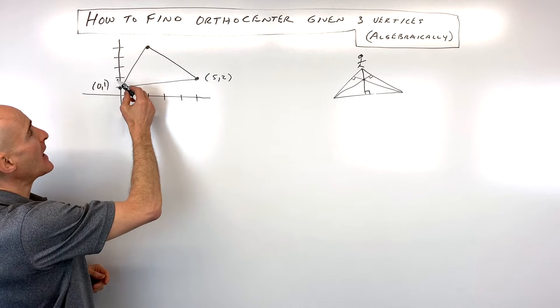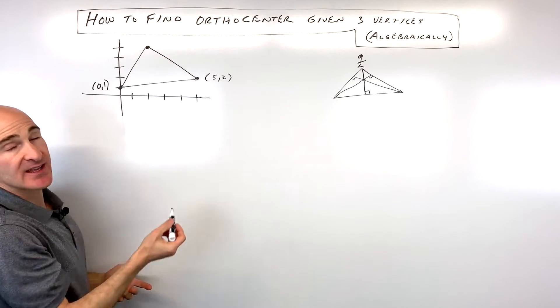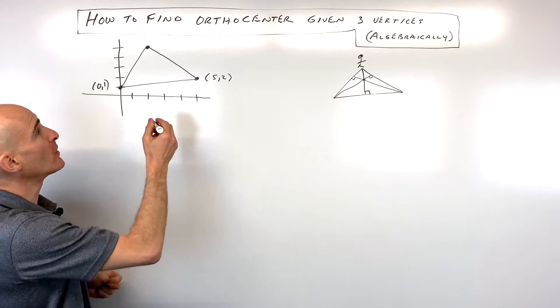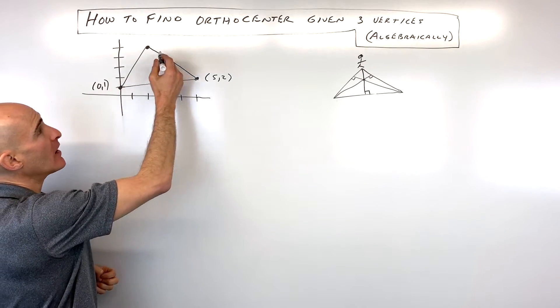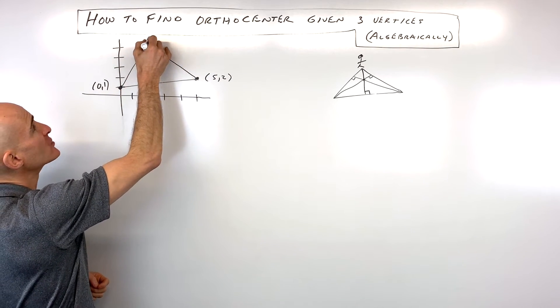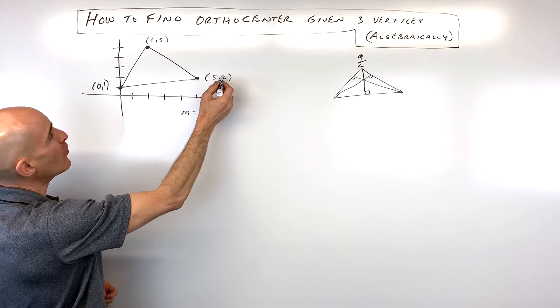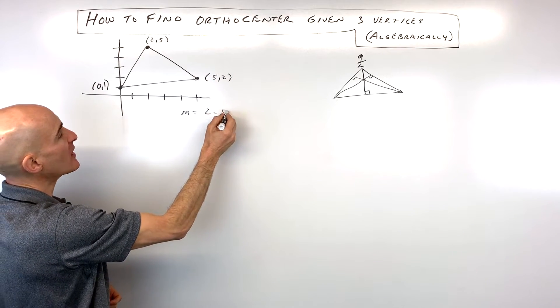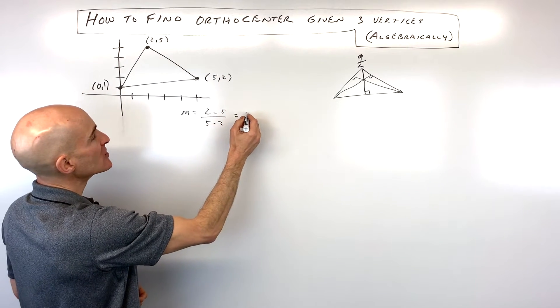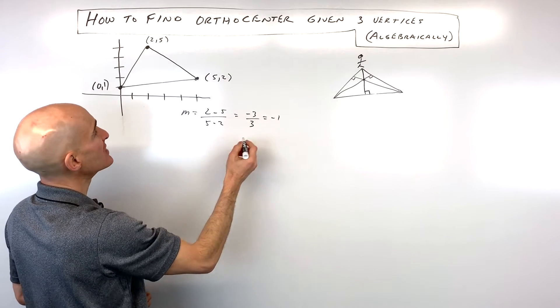I need to find the slope of one side of the triangle, then find the opposite reciprocal slope, which will be the perpendicular slope. This point is (2, 5). The slope from (2, 5) to (5, 2), using the slope formula y₂ minus y₁ over x₂ minus x₁, is (2 - 5) over (5 - 2), which gives us negative 3 over 3, or negative 1.